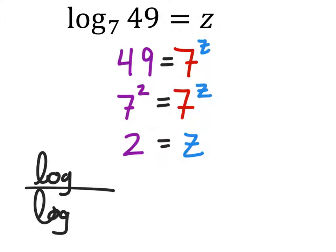And these are, again, common logs. So, the numerator is the log of 49, which we saw here. And the log in the denominator is of the base, which is 7.